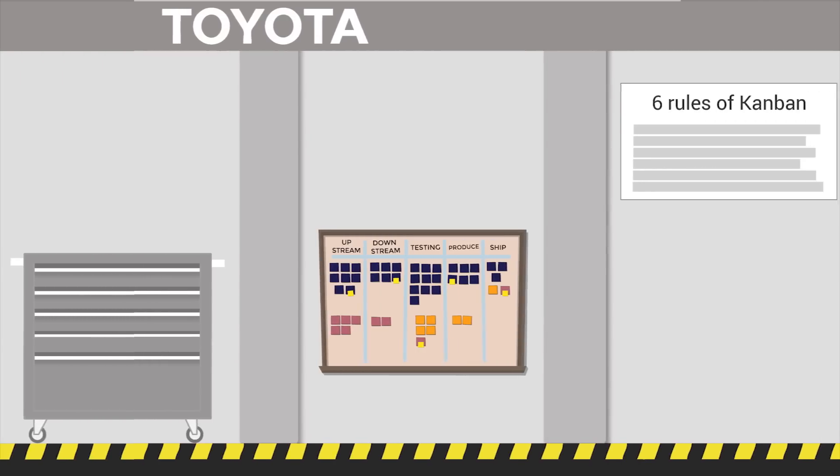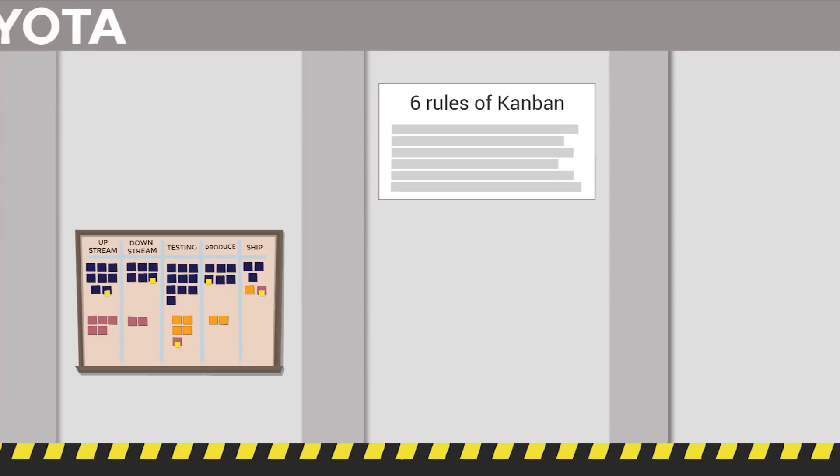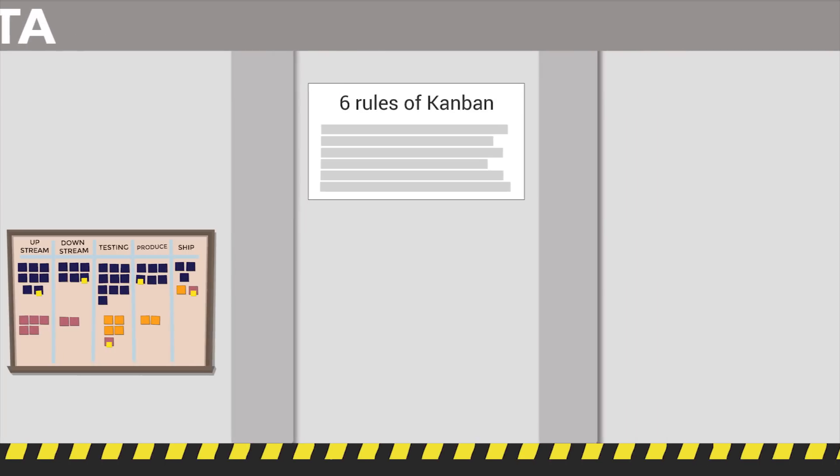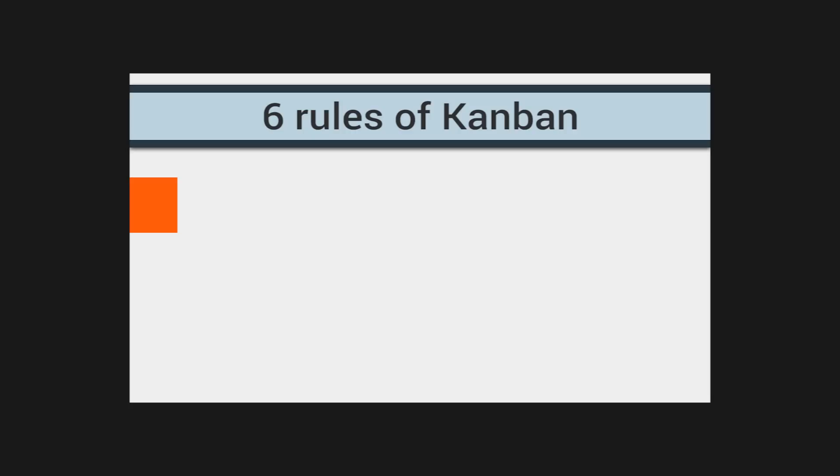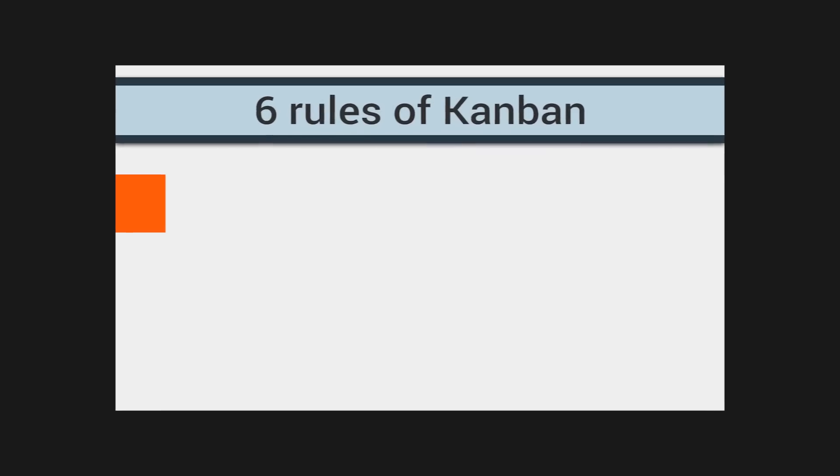Whether used for development or manufacturing, Kanban has six rules developed by Toyota that help ensure a successful implementation.